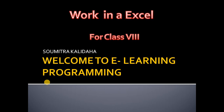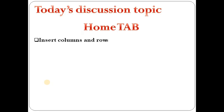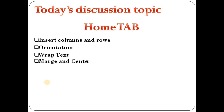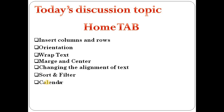You know very well what content is present in your chapter — it is a very similar kind of chapter which you also learned in class 7, and that chapter is very small so I am not introducing it briefly. Today I will tell you about advanced Excel: how to work in Excel, and I have introduced each and every tab and how to perform all these options. Today I will discuss the home tab. Today's discussion topics are: insert columns and rows, orientation, wrap text, merge and center, changing the alignment of text, sort and filter, and last — creating a calendar in Excel.